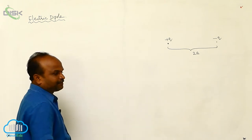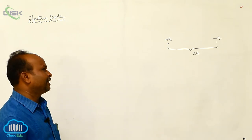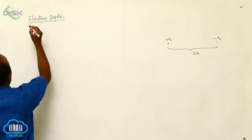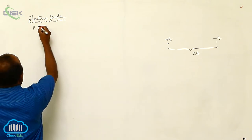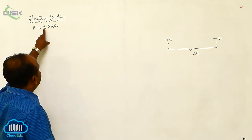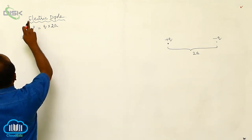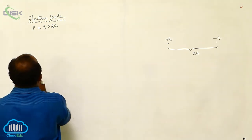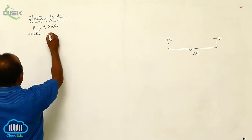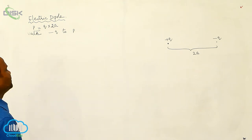The behavior of the electric dipole can be explained through its electric field intensity as well as its electric dipole moment. The electric dipole moment is represented by P, and it is defined as the product of one of the charges and the separation between them: P = Q × 2A. It is a vector quantity, and its direction is always from the negative charge to the positive charge.